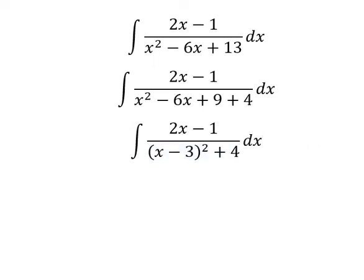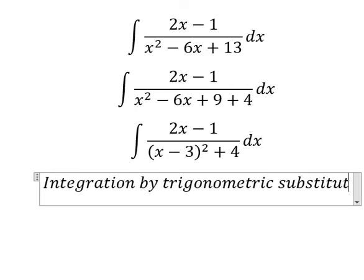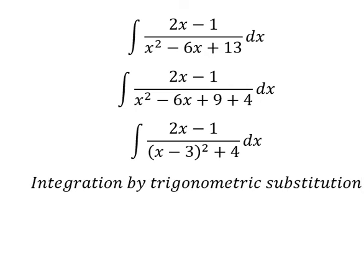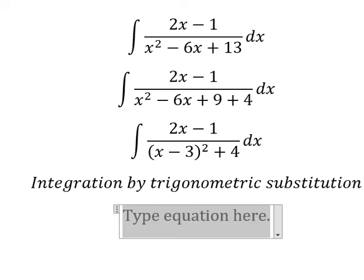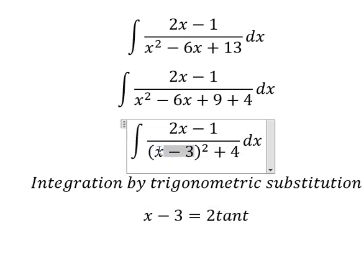Next we can use integration by trigonometric substitution. So I will put x minus three equals to two times tan(t), because if I put this one here we have four times tan²(t). Number four, we can do factorization: four times tan²(t) plus one, we change to sec²(t).